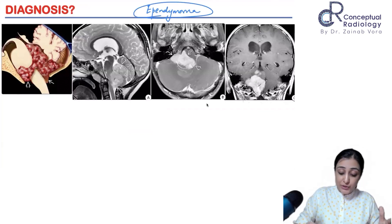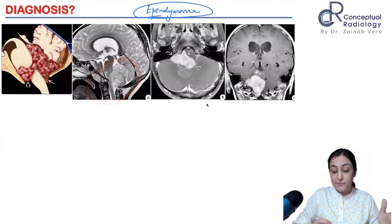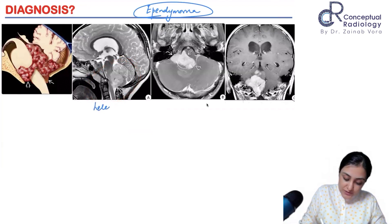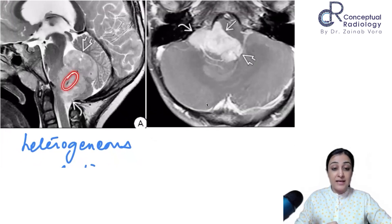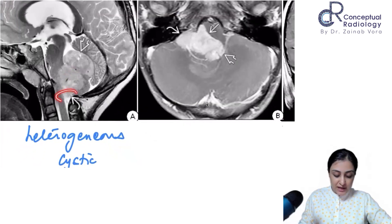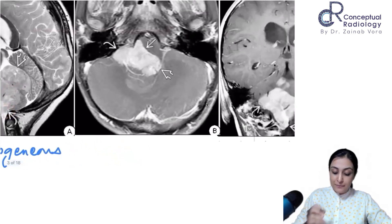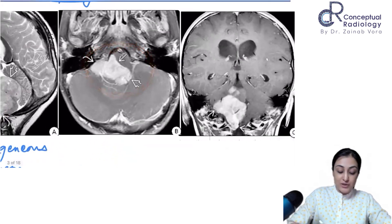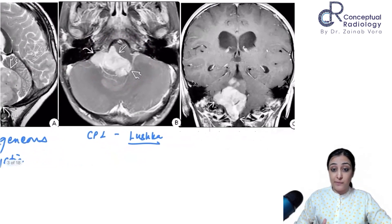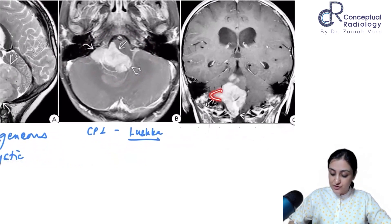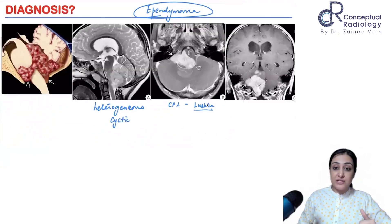Classically you will see a lesion which is predominantly heterogeneous, as seen on this T2-weighted sagittal image — heterogeneous with cystic areas and flow voids coursing through the tumor. On the axial image you can see how it is going into the spinal canal, and via the foramen of Luschka it is spreading into the CP angle. This lateral and posterior spread into the foramen of Magendie are all classic features of ependymoma.